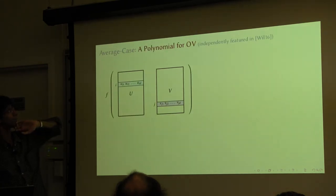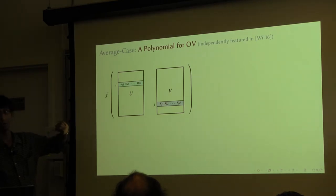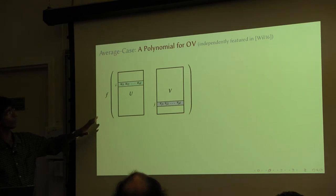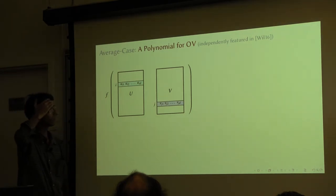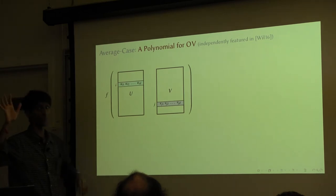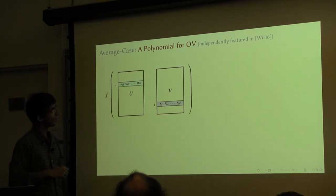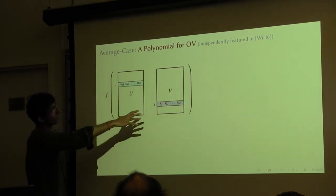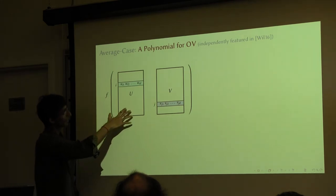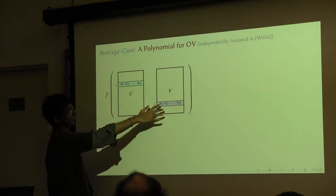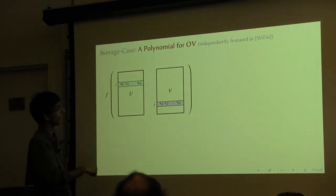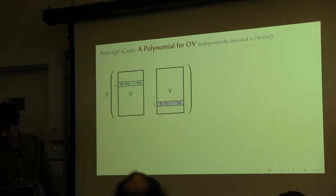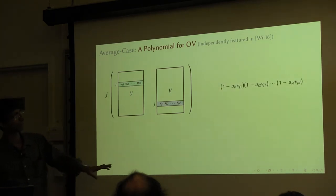What is this average-case problem? It is going to be the problem of evaluating a certain polynomial. We are going to construct this polynomial, and along the way you'll see why it makes sense. I'm going to define this polynomial f throughout, and it's defined on the same set of variables as an instance of the orthogonal vectors problem — n times D variables for the first set, n times D for the second.